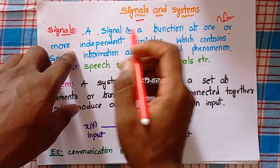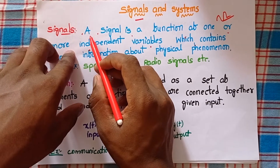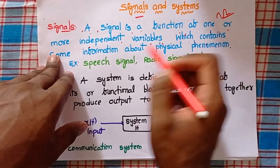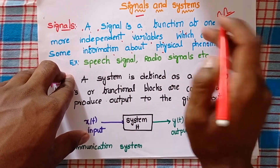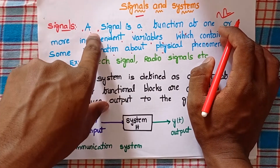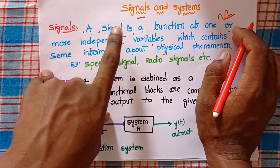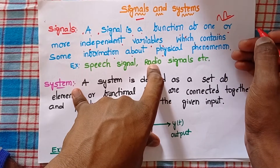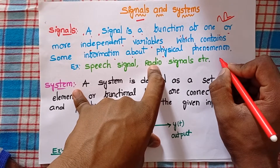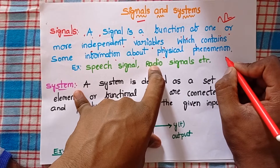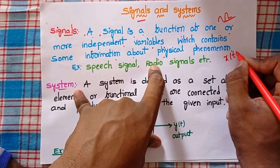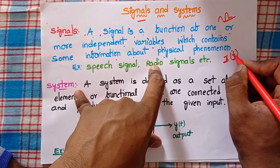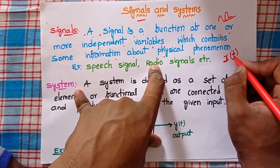First, let's see the definition of signals. A signal is a function of one or more independent variables which contains some information about a physical phenomenon. The independent variables are nothing but time and frequency. If we represent a signal like x of t, here x is the signal and t is the independent variable.